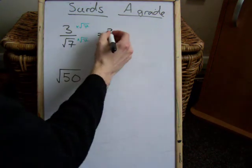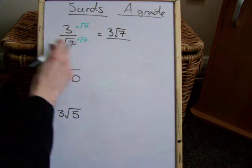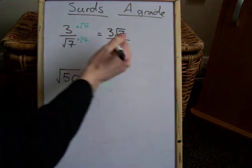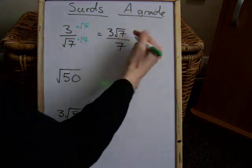So, at the top, I'm going to have 3 lots of root 7. And on the bottom, I'm going to have root 7 lots of root 7, which is equal to 7. That there is my answer.